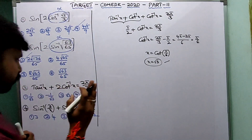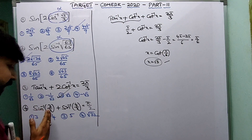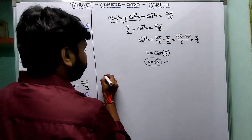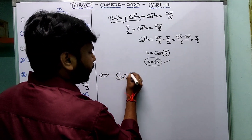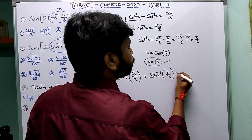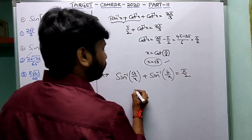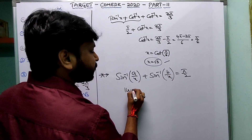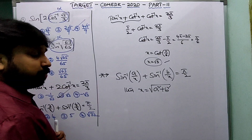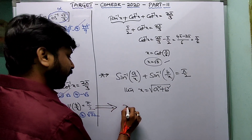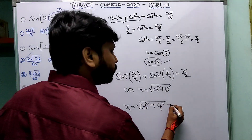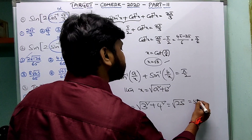Question: sin⁻¹(3/x) + sin⁻¹(4/x) = π/2. Find x. A shortcut formula: sin⁻¹(a/x) + sin⁻¹(b/x) = π/2 implies x = √(a² + b²). Applying here: x = √(3² + 4²) = √(9+16) = √25 = 5.